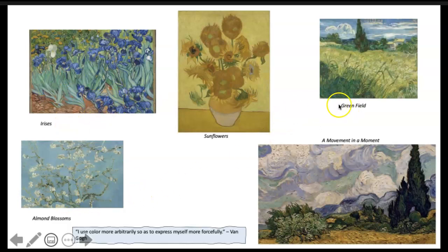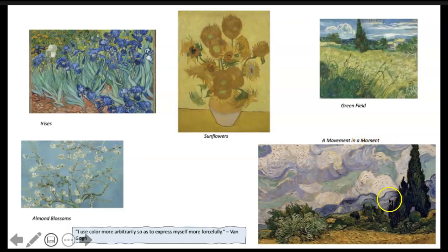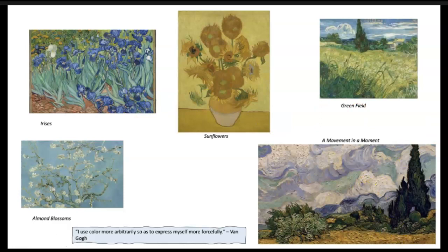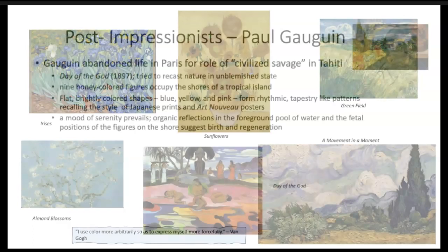Here are some other famous works: the irises, almond blossoms, green field. This one captures movement in a moment — notice those clouds in motion, a whole different type of movement than we saw in Starry Night. You will see prints of all of these available for people to purchase — they're famous today even.